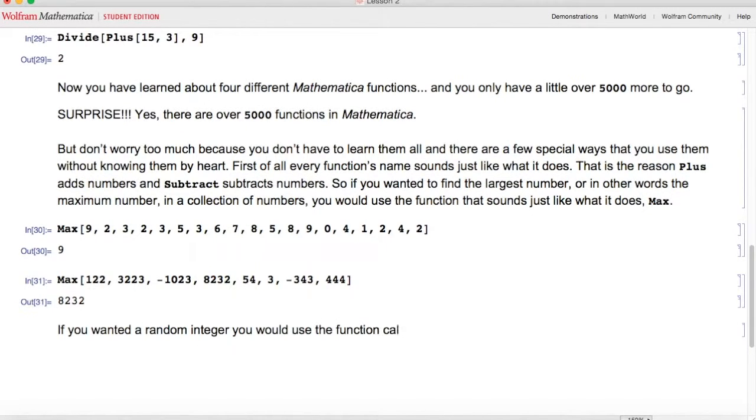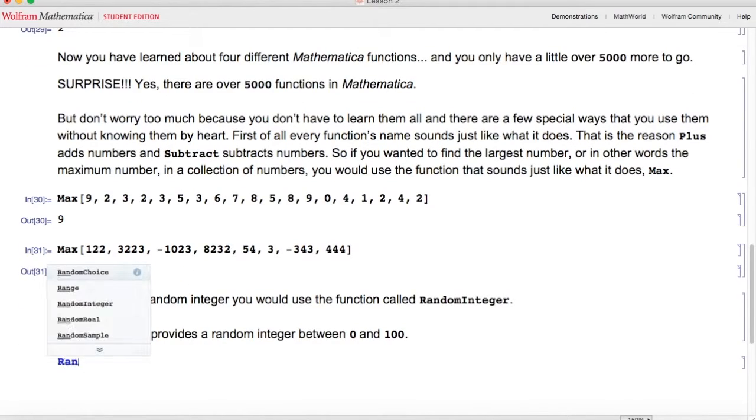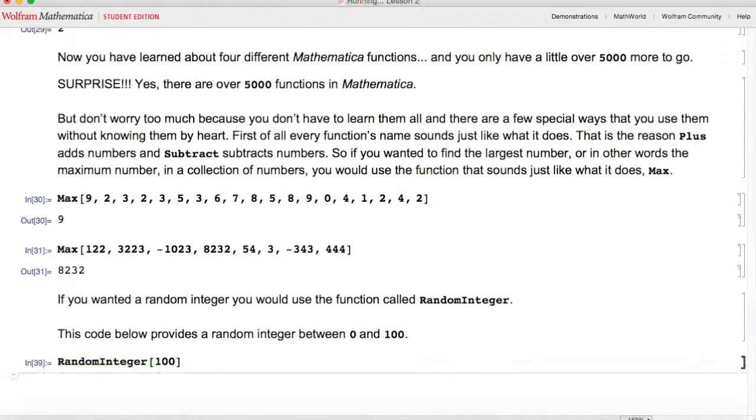If you wanted a random integer, you would use the function called RandomInteger. This code below provides a random integer between 0 and 100. So here I'm going to type RandomInteger of 100, hit shift enter and it's 11. I'll do it again and it's 62 now. I'll do it again and it's 57. I'll do it one last time and it's 88. RandomInteger is providing a different random integer between 0 and 100 each time.